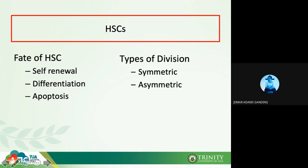Before I explain further, let me talk about the types of division. Division can be symmetric or asymmetric. When we say symmetric, both daughter cells will undergo differentiation. But when only one cell differentiates and the other returns to the pool for self-renewal, we call that asymmetric. I know if you haven't read the book it might be confusing, but let me explain it with a diagram.